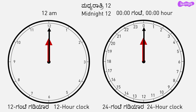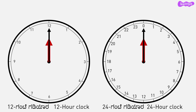In a 12 hour clock, the angle between the minute hand and hour hand will be 90 degrees at 3 p.m. or 3 a.m. And in a 24 hour clock, the angle between the minute hand and hour hand will be 90 degrees at 6 hours and 18 hours. Let's now see some conversions of time in 24 hour format through examples.